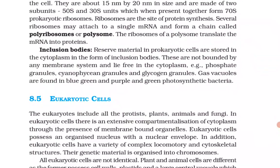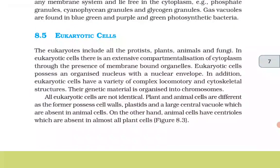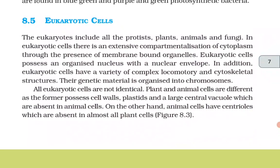Inclusion bodies: reserve material in prokaryotic cells are stored in the cytoplasm in the form of inclusion bodies. These are not bounded by any membrane system and lie free in the cytoplasm. Phosphate granules, cyanophycin granules, and glycogen granules; gas vacuoles are found in blue-green and purple and green photosynthetic bacteria.